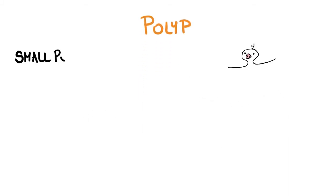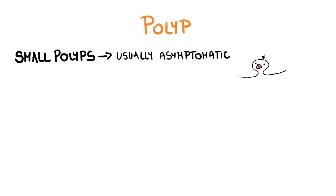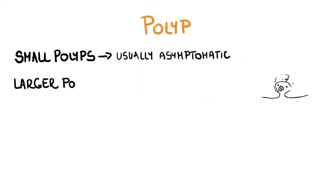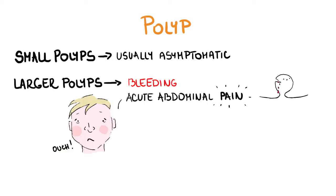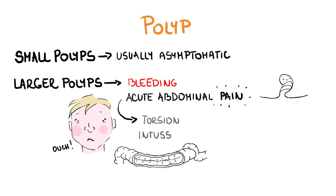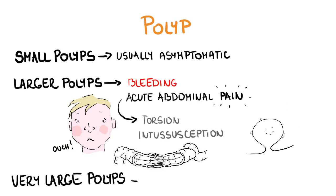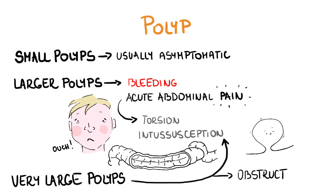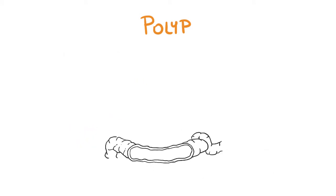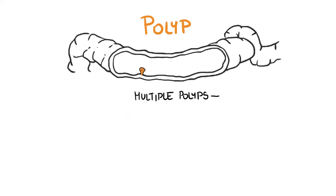Small polyps are usually asymptomatic. Larger polyps may be the cause of bleeding or acute abdominal pain due to their torsion, or they may cause an intussusception. Very large polyps may lead to intussusception or obstruct the bowel lumen. If multiple polyps are present, the term polyposis is used.